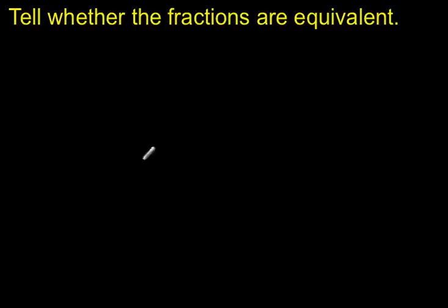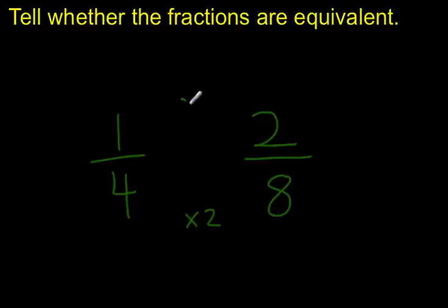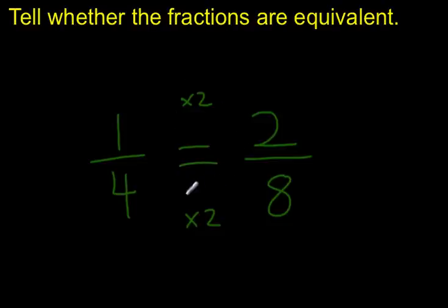Let's try one more. Let's take 1 fourth and 2 eighths. Let's look for a multiplication relationship. I usually start with the numerators or the denominators — whichever has a more obvious relationship. Starting with the denominators: four parts, eight parts. Eight is two times as many as four, so the denominators have a times-2 relationship. And two parts is twice as many as one part, so the numerators also have a times-2 relationship — 1 times 2 is 2, and 4 times 2 is 8. I have the same multiplication relationship, so these fractions are equivalent.